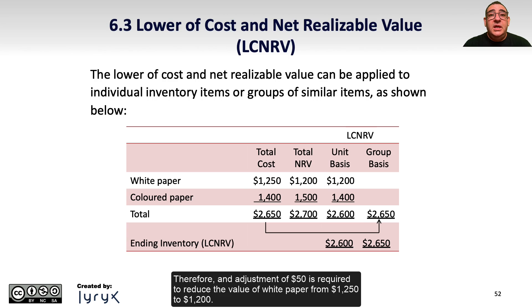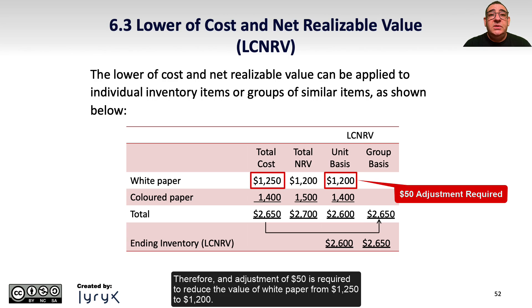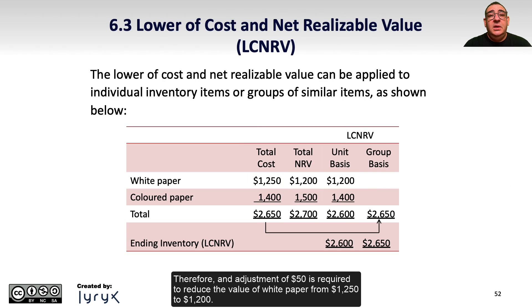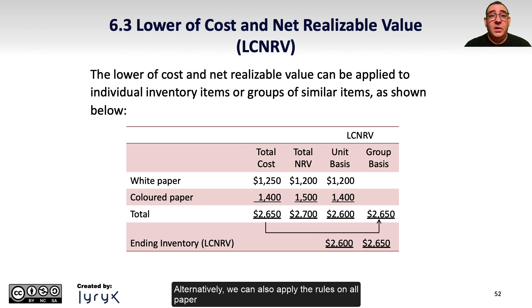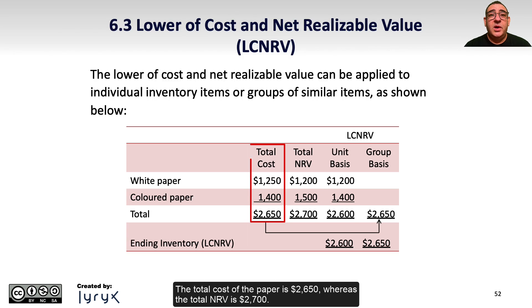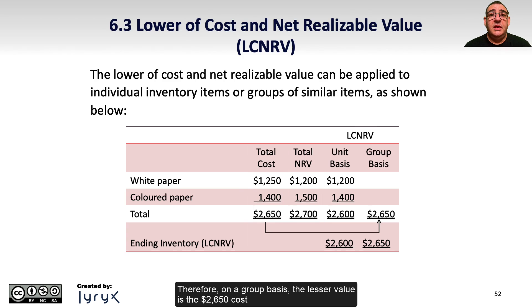The total inventory cost of both products is $2,650, whereas based on NRV, the total value should be $2,600. Therefore, an adjustment of $50 is required to reduce the value of white paper from $1,250 to $1,200. Alternatively, we can also apply the rules on all paper inventory combined instead of on an individual basis. The total cost of the paper is $2,650 whereas the total NRV is $2,700. Therefore, on a group basis, the lesser value is the $2,650 cost, so the inventory does not require an adjustment.